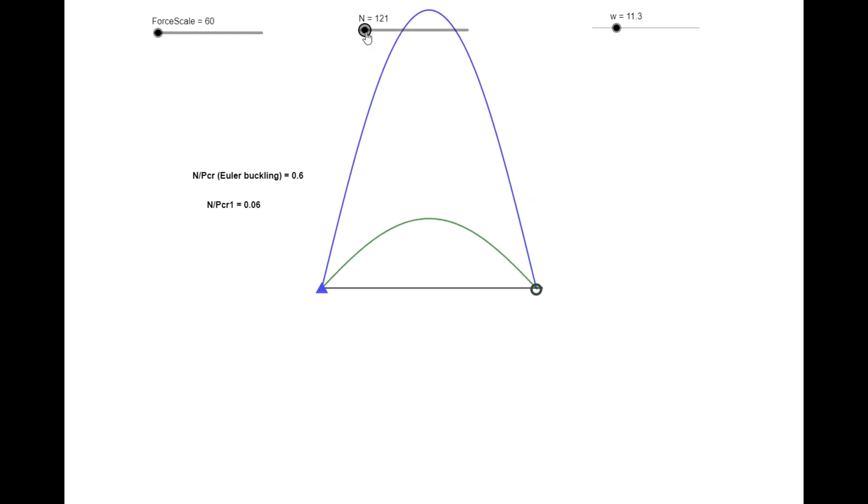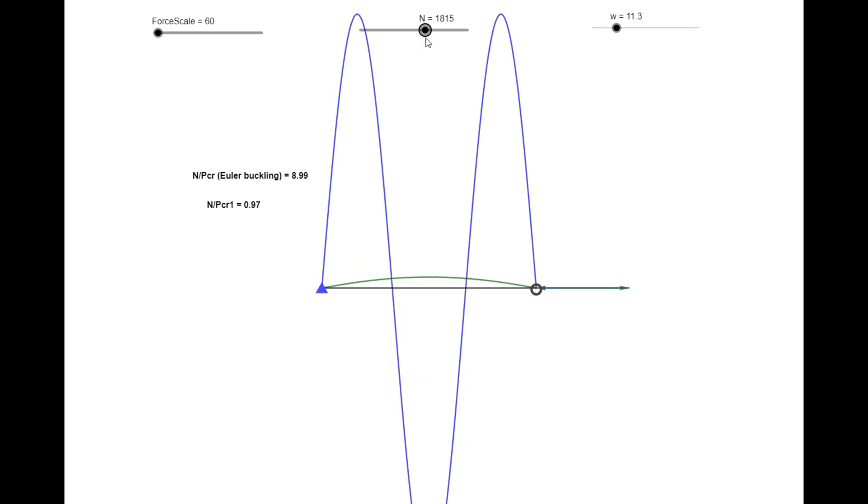When the compressive force exceeds the Euler buckling load, we enter the post-buckling phase. And if we continue to increase the compressive force, we see that at one point, the beam column would buckle again. This is the second buckling mode of the beam, or what we call in linear buckling analysis, as the second eigen mode of buckling.